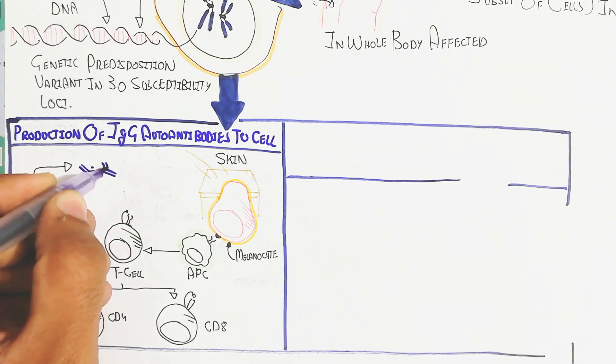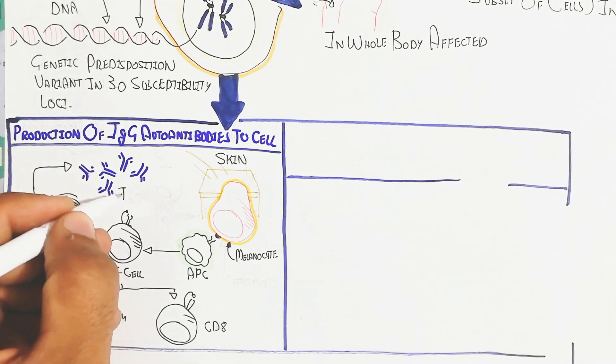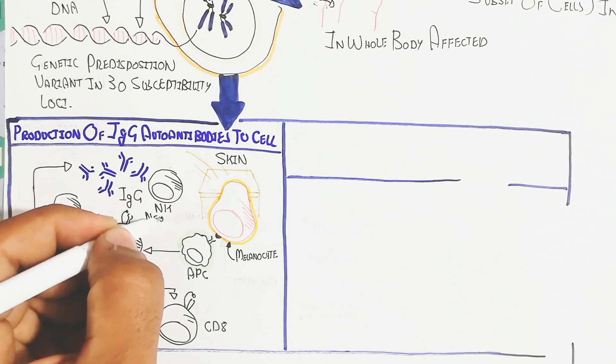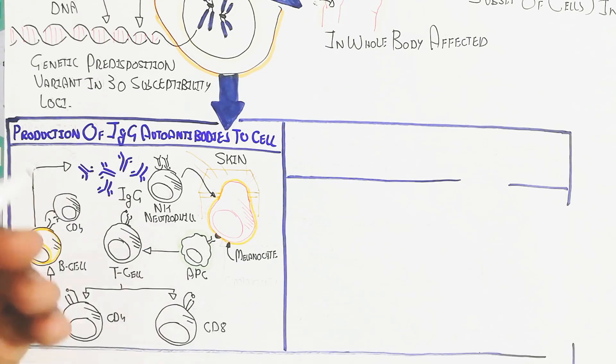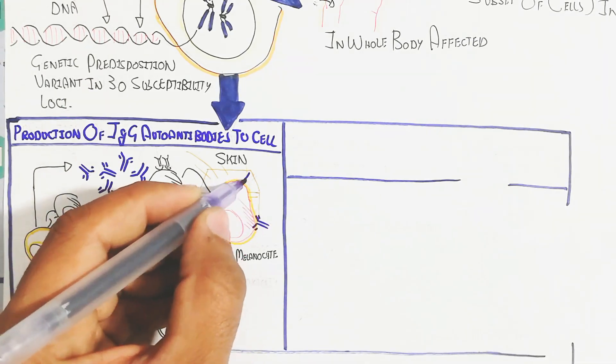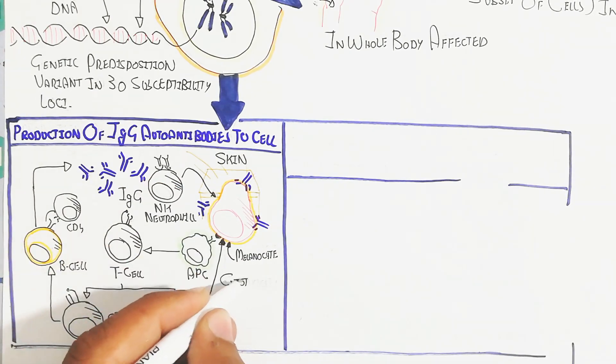IgG allows natural killer cells to bind with the Fc receptor, leading to activation and killing of the melanocyte. The damage or removal of melanocytes occurs this way, and CD8 is used for cytotoxicity.